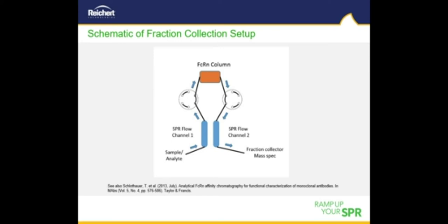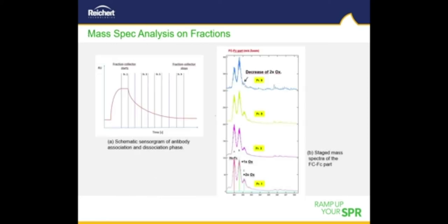The SPR sensor chip used was dextran. FcRn (neonatal Fc receptor) was immobilized onto both channels and the microcolumn by amine coupling with EDC/NHS. An antibody mixture at a concentration of 200 micrograms per milliliter was injected for three minutes, and then dissociation was carried out for eight minutes. Fraction collection started in the last minute of the dissociation phase and fractions were collected at regular intervals indicated by vertical lines in the schematic.